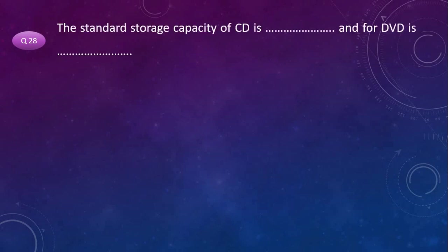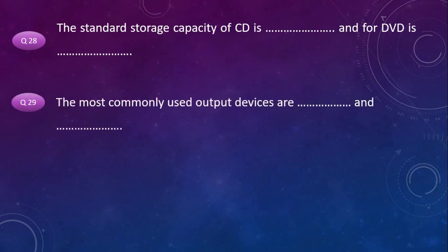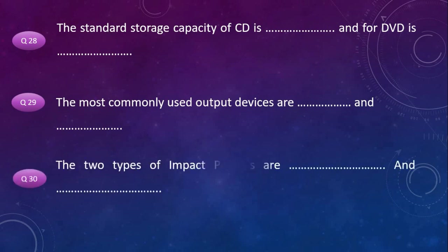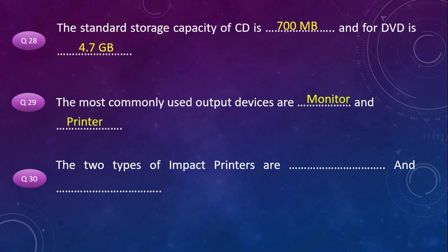The standard storage capacity of CD is 700 MB and for DVD is 4.7 GB. The most commonly used output devices are monitor and printers. The two types of impact printers are character printer and line printer.